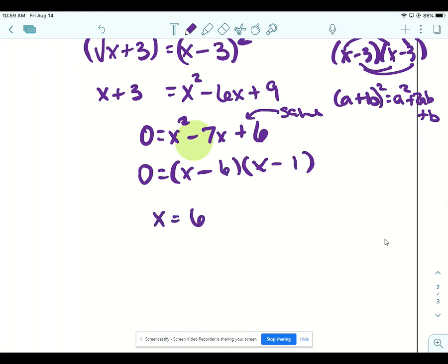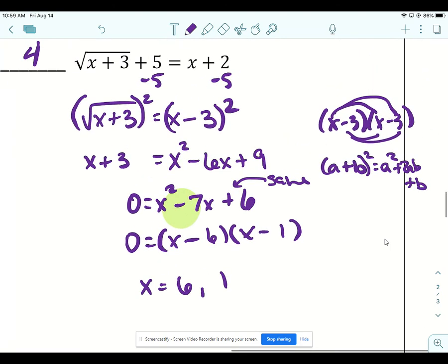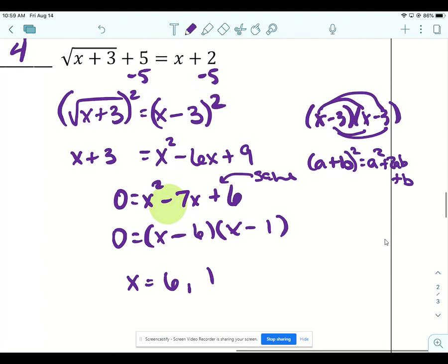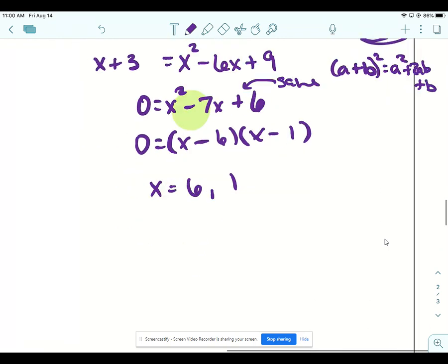So we get two answers. We don't really know if they are answers until we check our solutions. So I'll take 6 and I'll plug it into both of the x's and then I'll go back and do the same thing with 1.